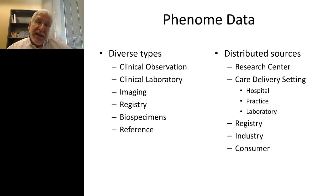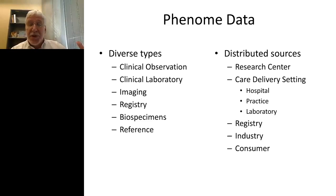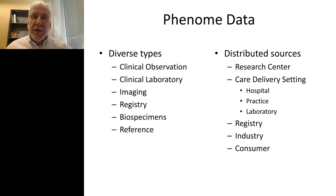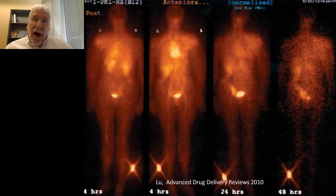Phenome data comes from many different places: clinical observations, laboratories, imaging, registries, biospecimens, and even reference data. It's distributed across many different sources. One of the challenges of doing big data in biomedicine is embracing its large collection of distributed sources and types. One of the key pieces of emerging big data that will in many ways rival the size of genomic data is imaging data.